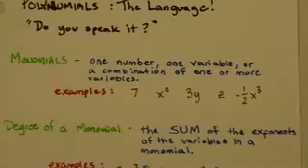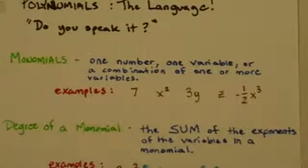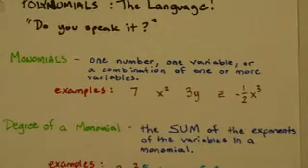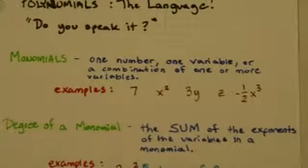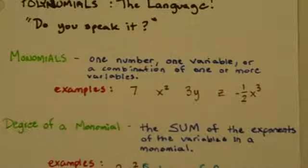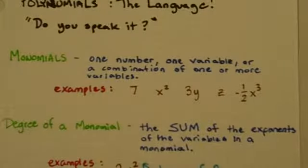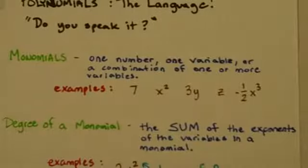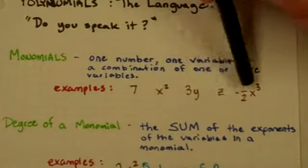First up, monomials. Okay, we may have seen these before but we call them terms like earlier on in math and now when we get to big boy big girl math we call them monomials. A monomial is one number or one variable or a combination of one or more variables. All of these are examples of monomials.